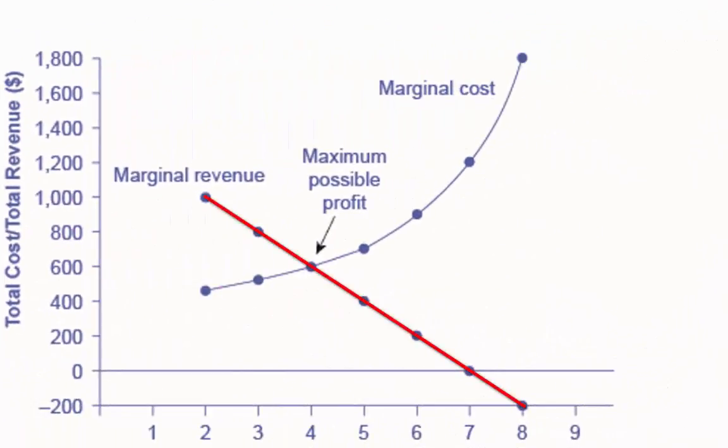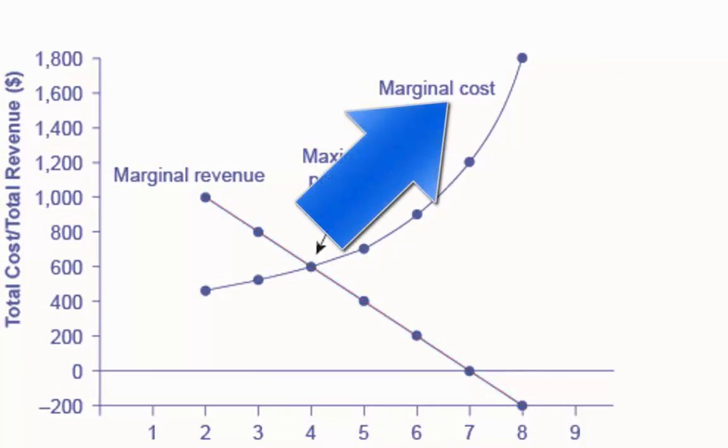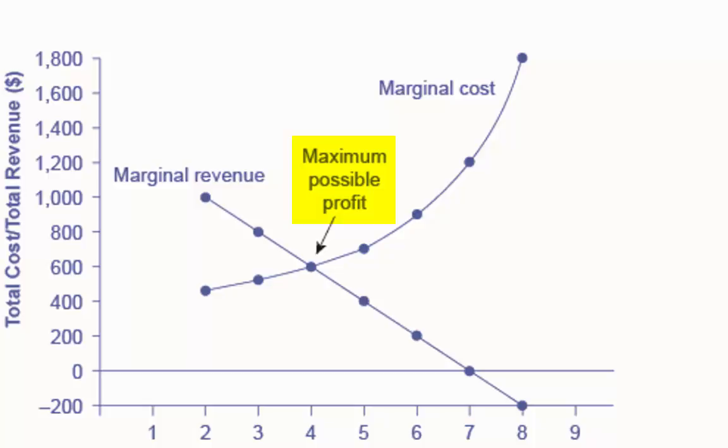For a monopoly like this one, marginal revenue decreases as additional units are sold. The marginal cost curve is upward sloping. The profit-maximizing choice for the monopoly will be to produce at the quantity where marginal revenue is equal to marginal cost.